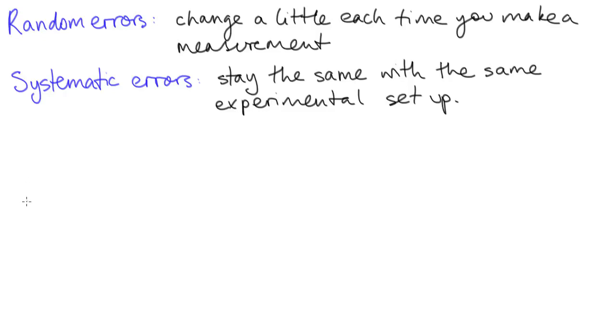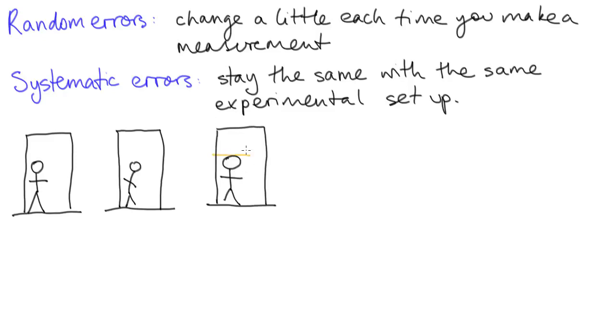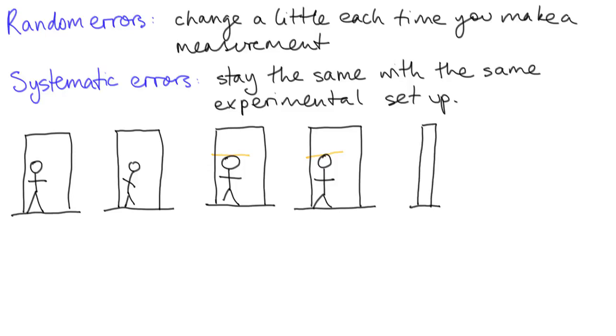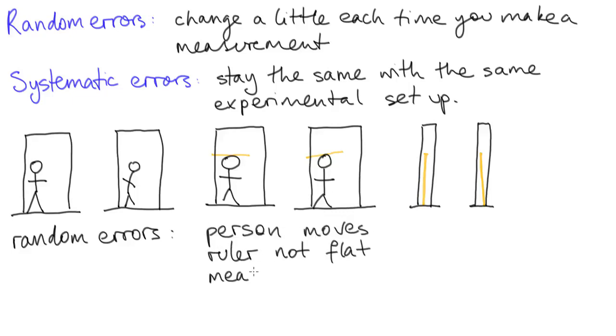Let's go back to my system for measuring someone's height and think about what sort of errors might come into this experiment. First of all, the person being measured might not stand the same way each time, and then the person doing the measurement might not balance the ruler perfectly horizontal, or maybe they hold the measuring tape not quite vertical or even not flush against the floor. These things are all examples of random errors.